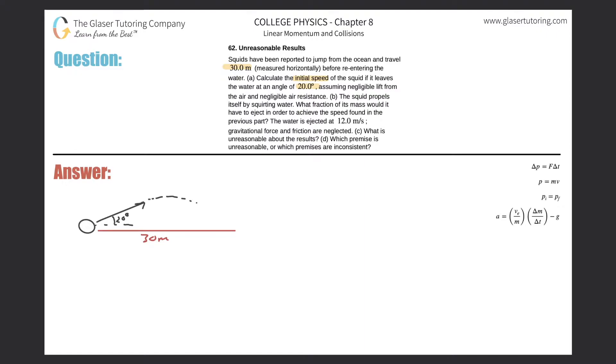This problem should look very similar to problems you've done in kinematics, where we have the range. This is the formula from kinematics: the overall horizontal range will be equal to the initial velocity squared multiplied by the sine of two theta all over g. We're being asked to find the initial velocity.